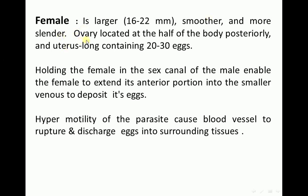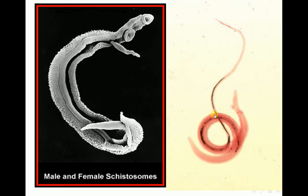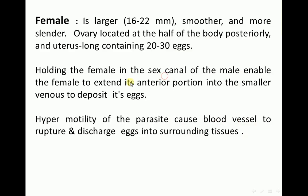The ovary is located at the posterior half of the body, and the uterus is long, containing 20 to 30 eggs. These are the eggs in the uterus. Holding the female in the gynecophoreal canal of the male enables the female to extend its anterior portion into the smaller venules to deposit its eggs.